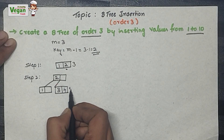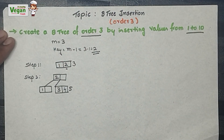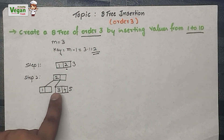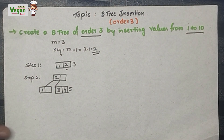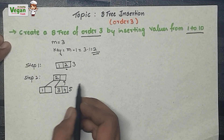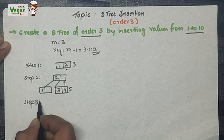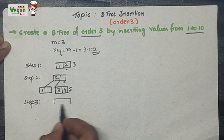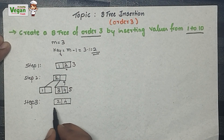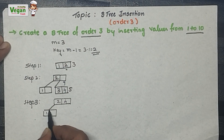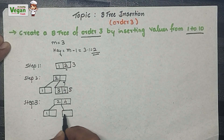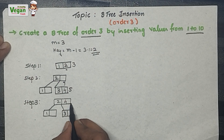Next, 4 is written and then 5. I can't insert 5 because the maximum key value is 2 for a node. So I find the median element among 3, 4, and 5 and shift it one level upward. In step 3, 4 is sent upside. Since there is space in the root, 4 is written there. 1 is less than 2, 3 is greater than 2, and 5 is greater than 4.